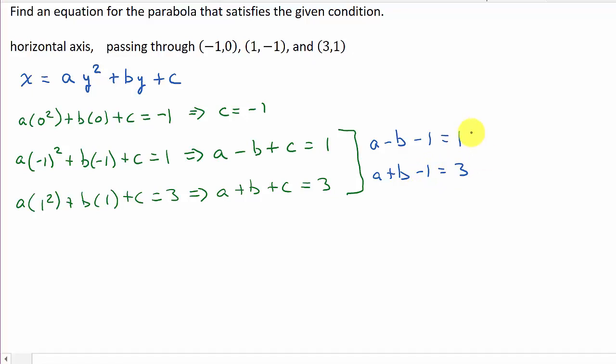And so what this does is gives us a minus b, and we move the 1 over, so we add 1 to both sides, so that's going to equal 2. And then here we'll add the 1 to both sides, so this is going to give us a plus b equals 4.